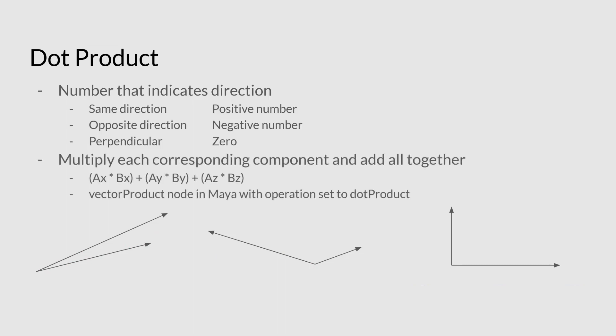To figure out this, you basically have to take each of the components, multiply them together, and add it all up. And again, the handy vector product node can do all of this for us. So the only thing you have to do is connect up the vectors to the vector product node and set the operation to dot product.